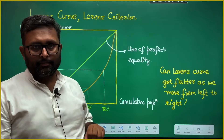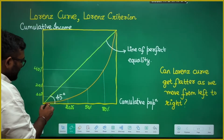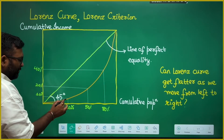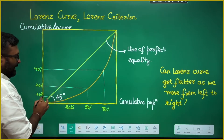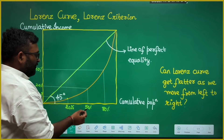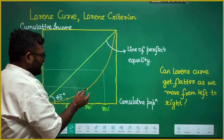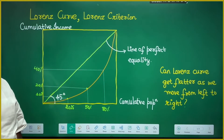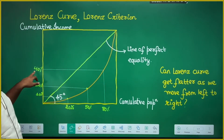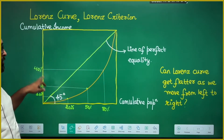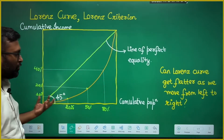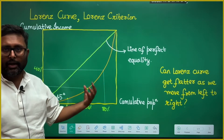But in general, it doesn't happen like this. In general, let's say this is your Lorenz curve. You will have data showing that 20% of the population is earning only 10% of income — not 20%. So there is inequality. 50% of the population is earning just 20% of income, not 50%. 80% of the population is also earning just 40% of income, not even half. So I am just trying to give you a view of how the Lorenz curve shows that there is a lot of inequality in this country.